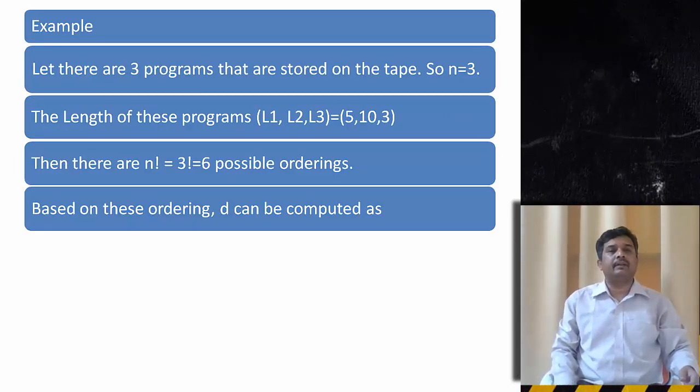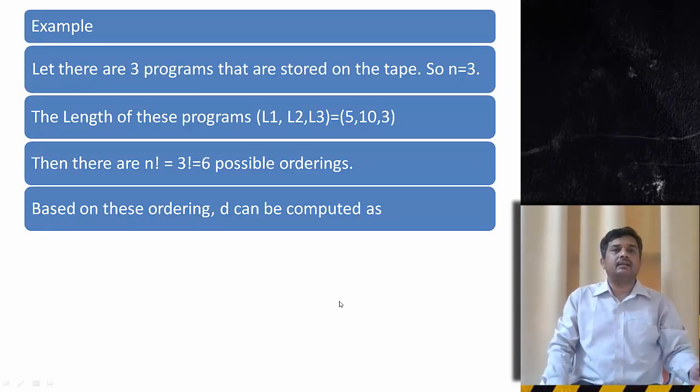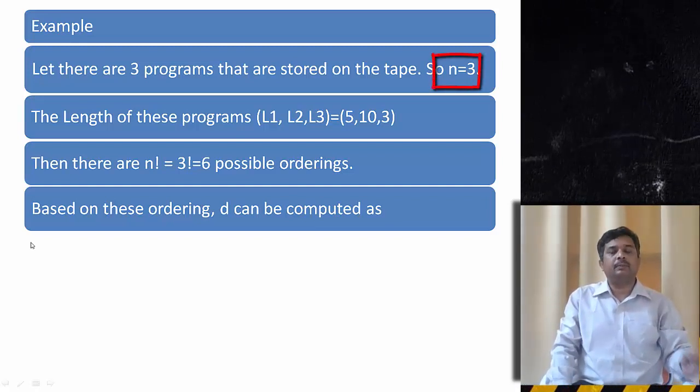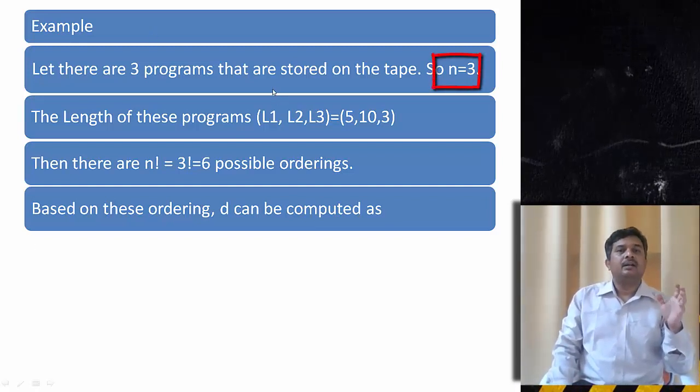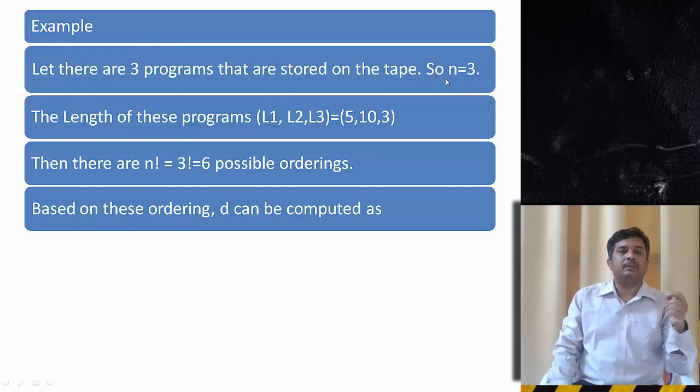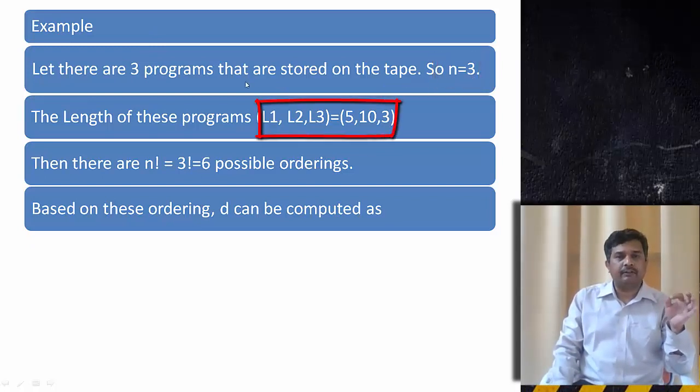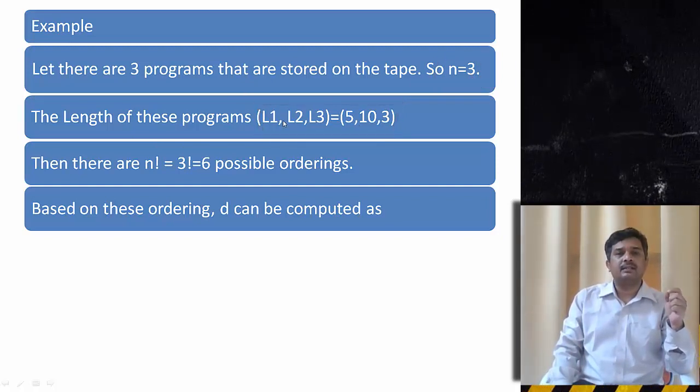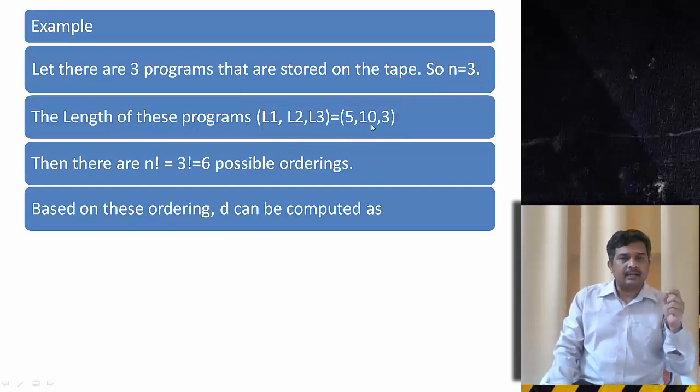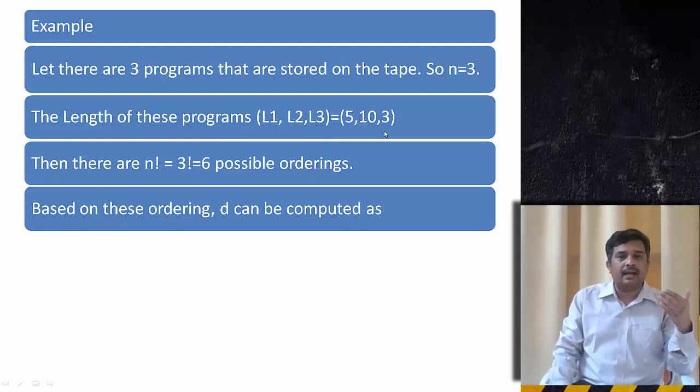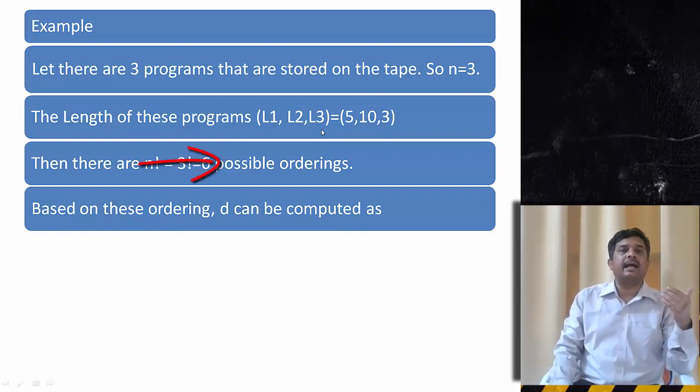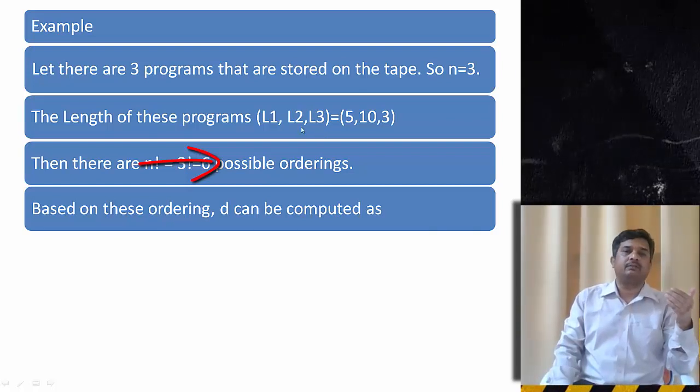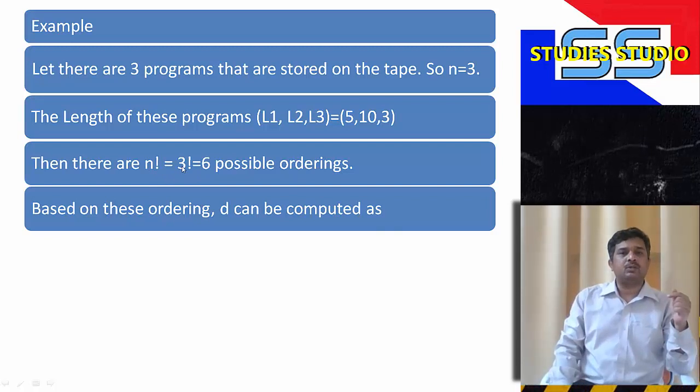Let us see this with the help of an example. Let there are three programs stored, so n equal to 3. The length of each program is: for first program the length is 5 units, the second program's length is 10 units, and the third program's length is 3 units. As there are three programs, in how many ways can I arrange them? I can arrange them in three factorial ways. It means six possible orderings I will be getting. Based on the ordering, we will get the d value.